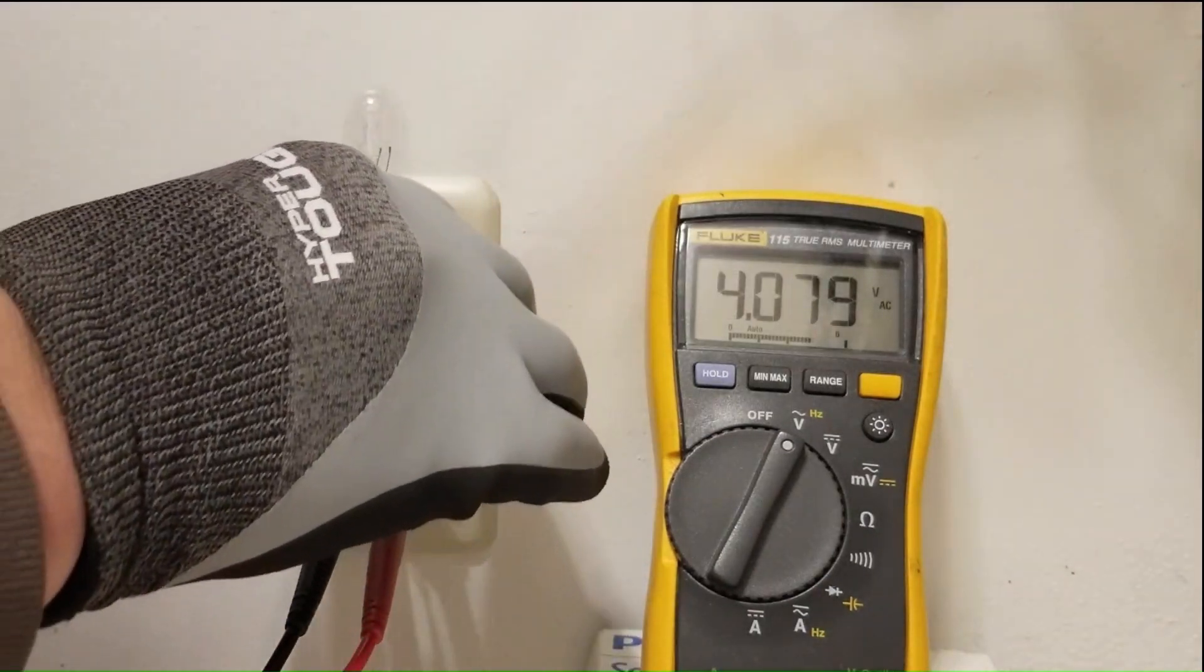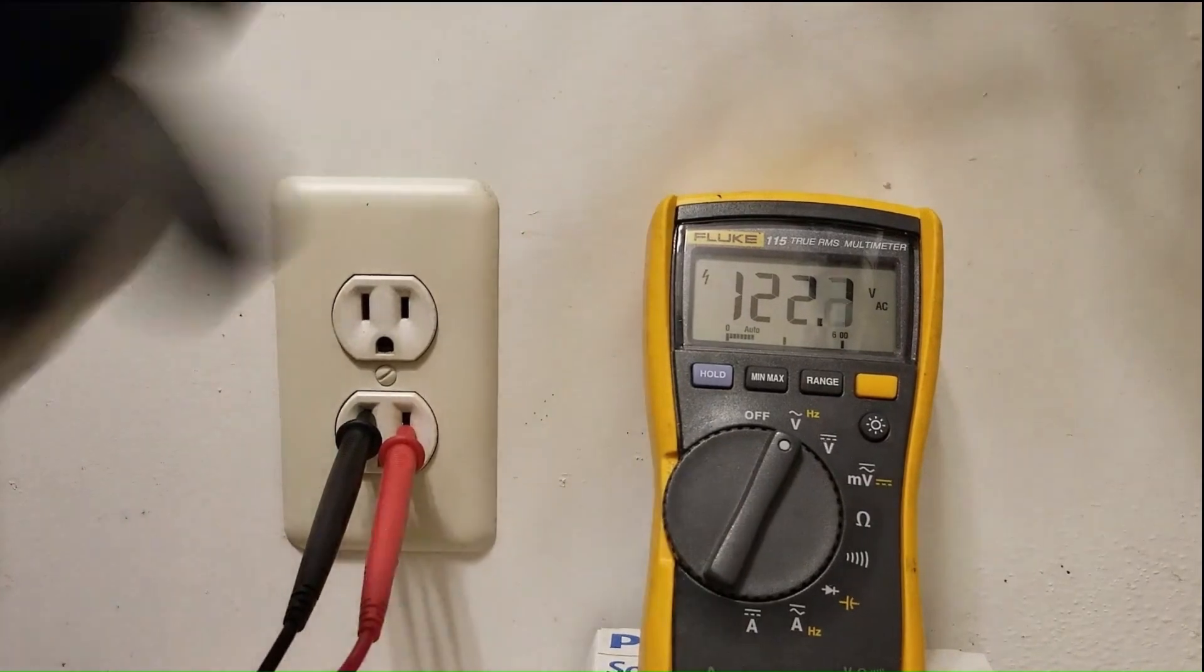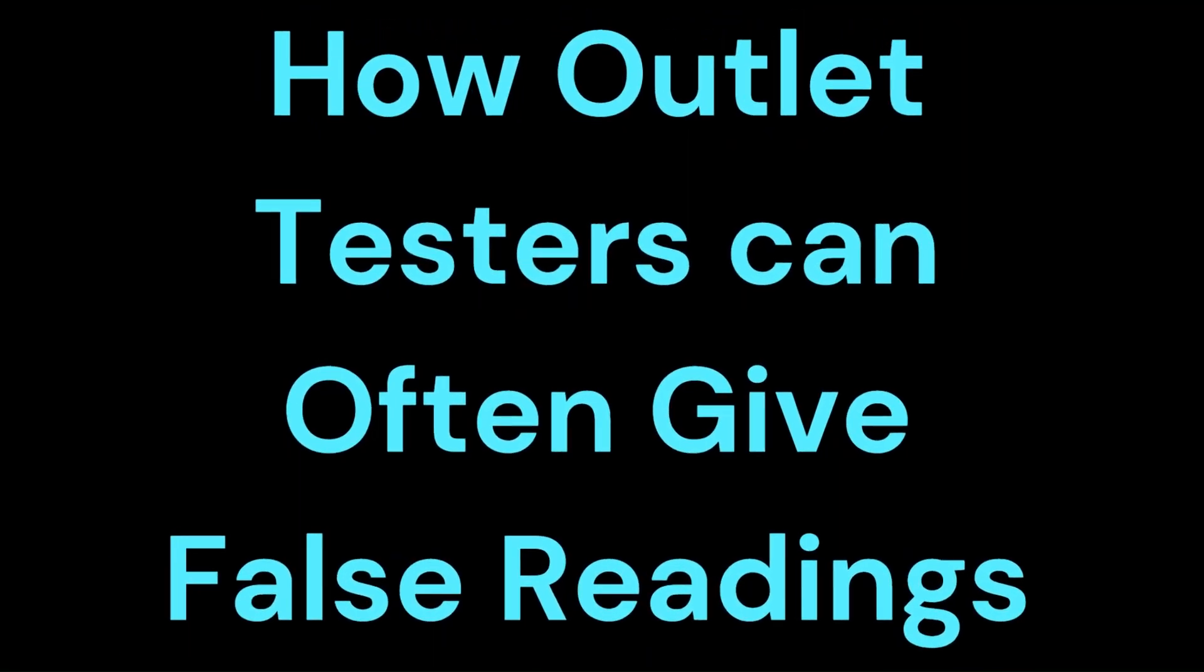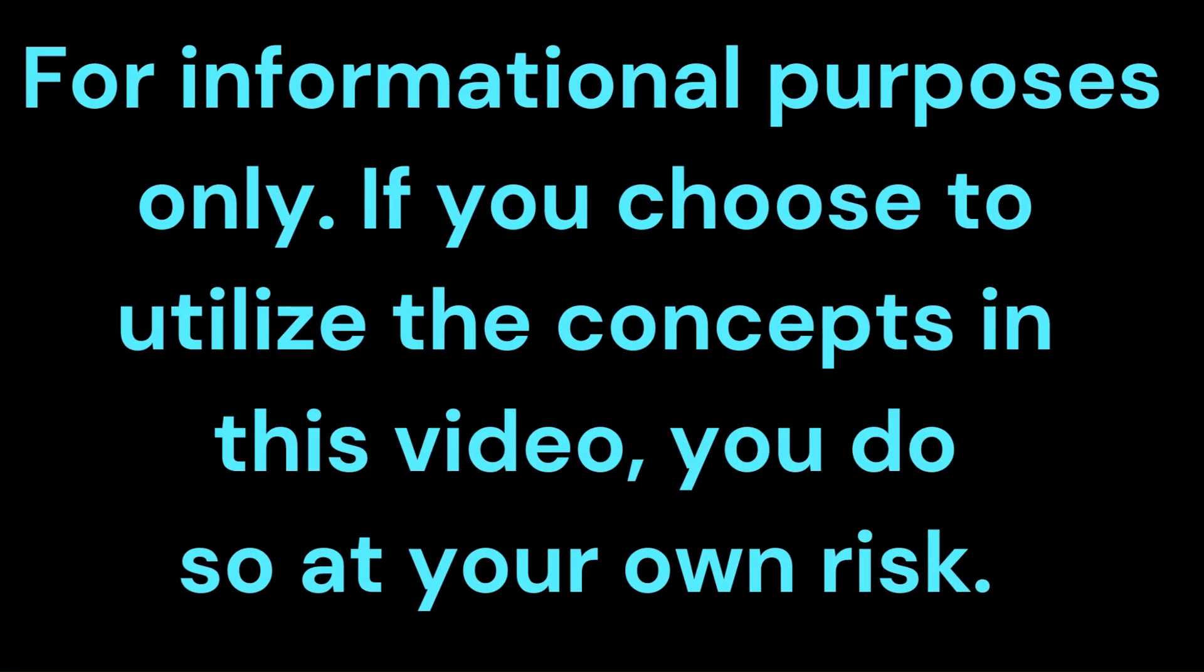If I remove the light bulb, voltage goes back up to 122 volts. In this video, I'll demonstrate that electrical outlet testers don't always work as expected and why they don't always provide an accurate indication of whether an outlet is functioning properly.